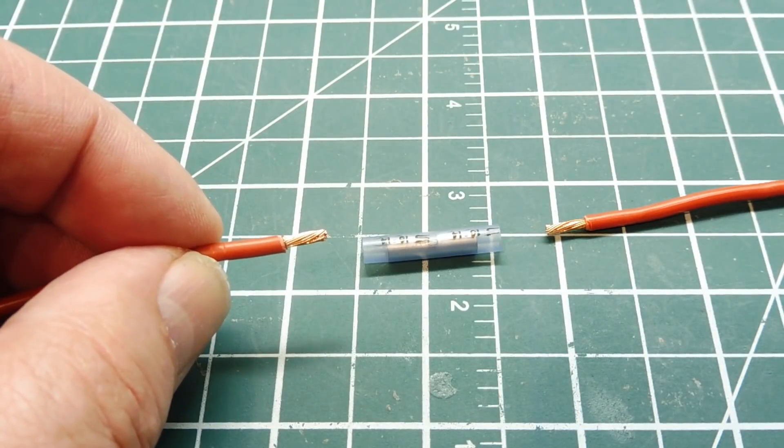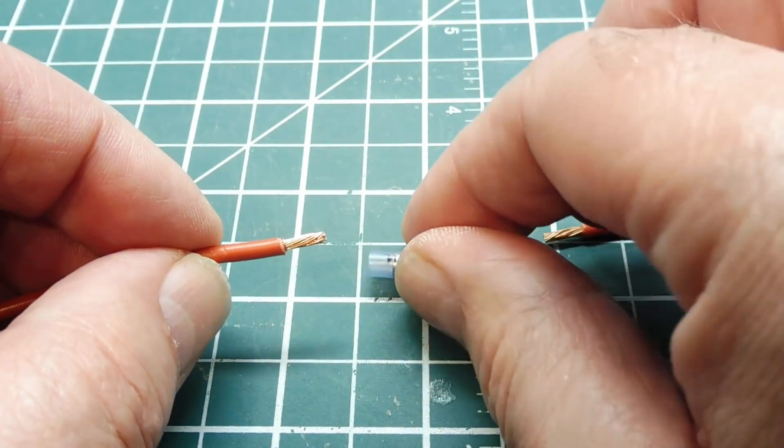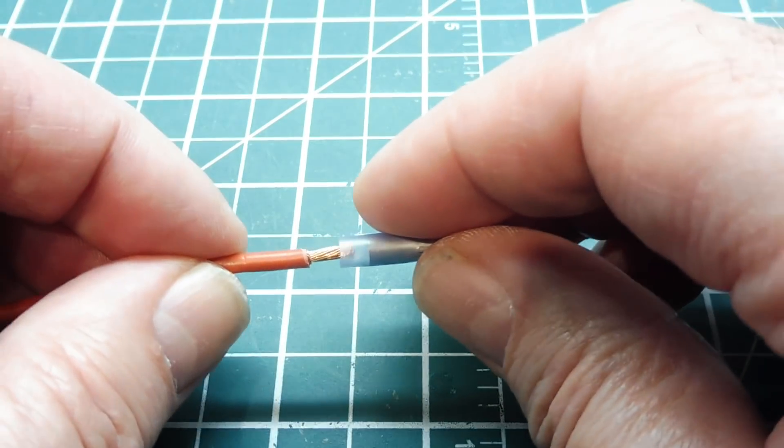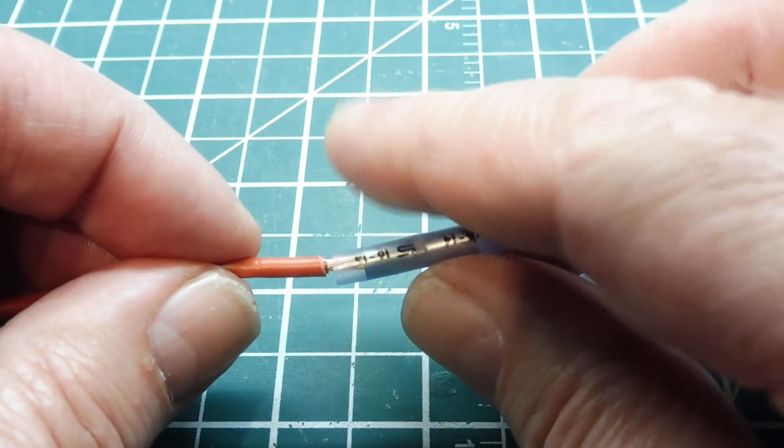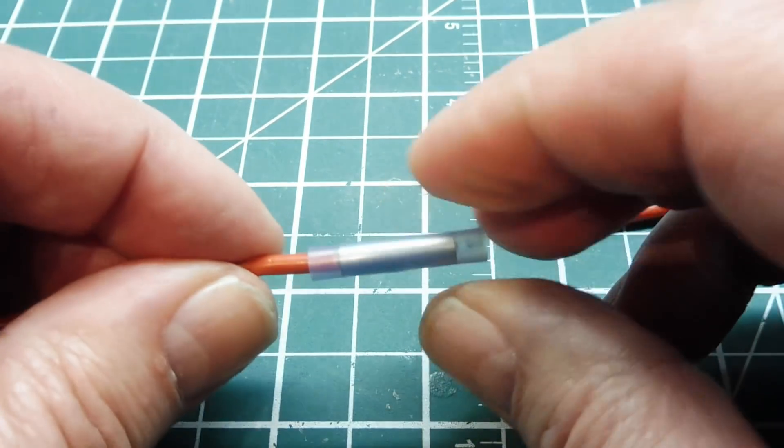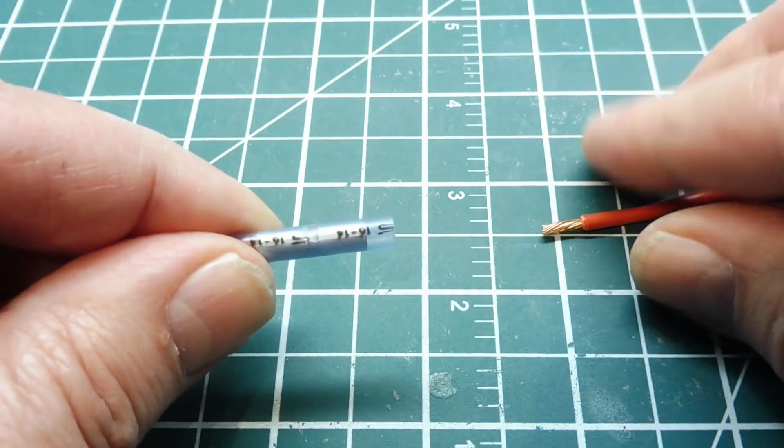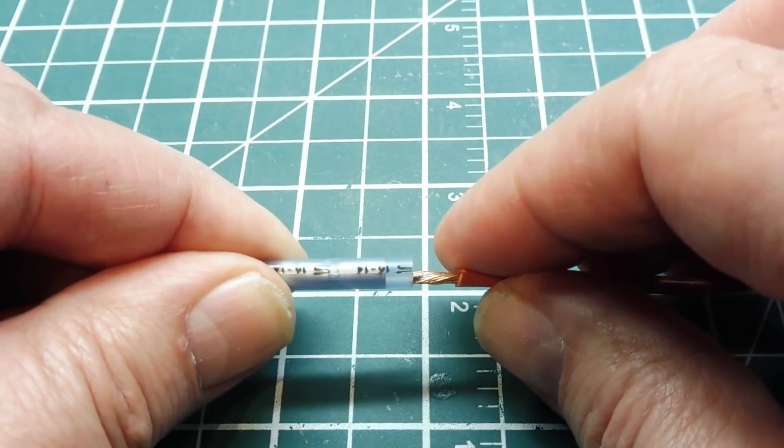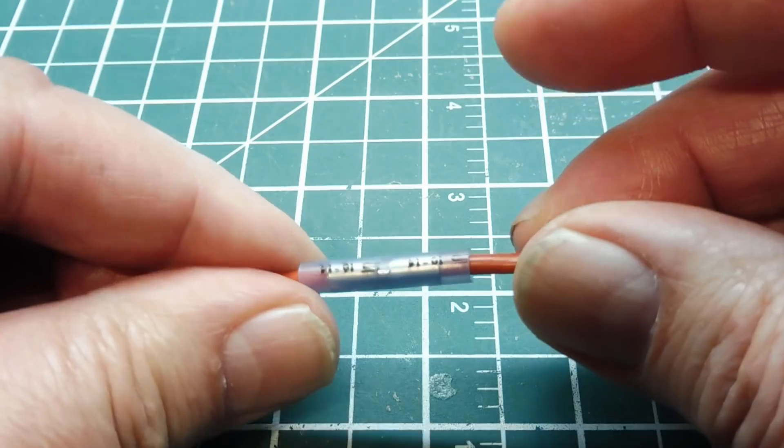Here's the two wires that I want to connect together with a butt splice, so I just take my butt splice and I put it over the stripped end of the wire and I insert the other wire into the other end, so they're both in there.